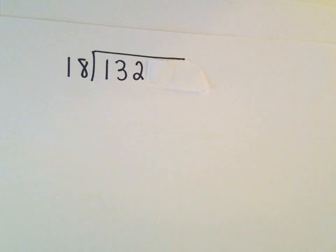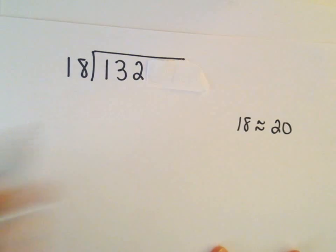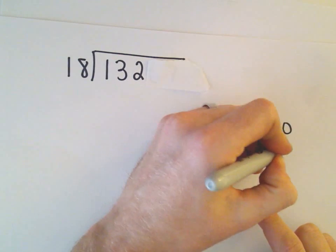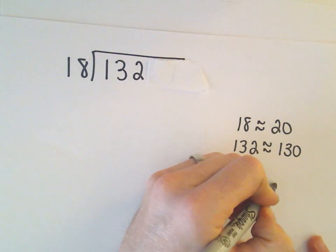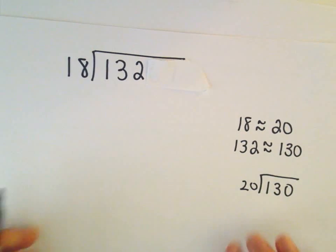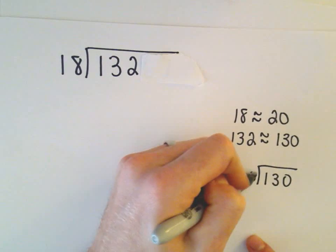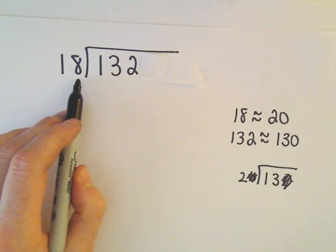And now this is where we have to sort of guess. And this, again, is where it's tedious. Usually what I think about is I think 18 is pretty close to 20. I just start estimating. 18 is pretty close to 20. 132, well, that's pretty close to 130. So instead of thinking about 18 and 132, in my head I'm kind of thinking, well, what's 130 divided by 20? And at least now I'm dealing with sort of rounded off numbers, to give myself a guess. So let's see. We can even pretend the zeros weren't there. So 2 will go into 13 about 6 times, with a little bit left over. So maybe 6 times 18 is a good guess.